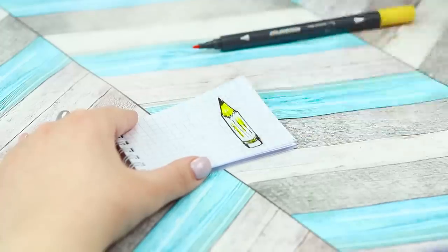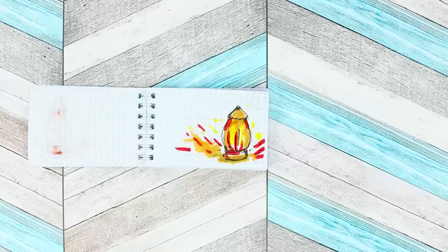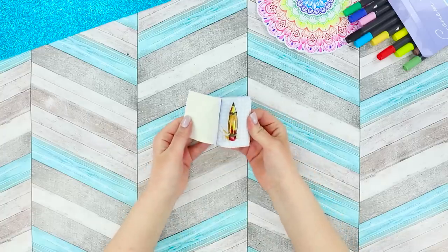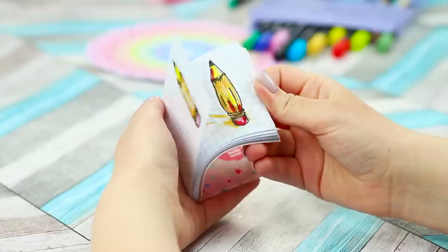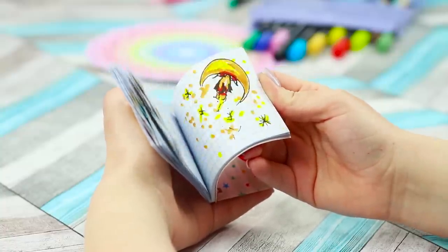Now take some markers and color the pictures. Draw the glow, the fire from the launchers. Draw the sun, the moon, and the stars. And now quickly turn the pages of the notebook! Congratulations! You just managed to launch a rocket yourself!